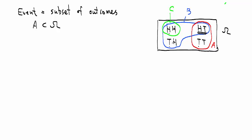We have just defined an event as a subset of outcomes, an event A as a subset of omega, the overall set of all possible outcomes. This is, in fact, a very convenient way to define events because we can use set operations to come up with a lot of more events.